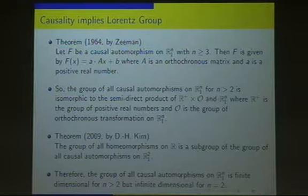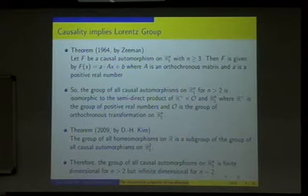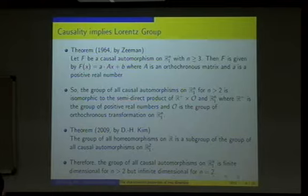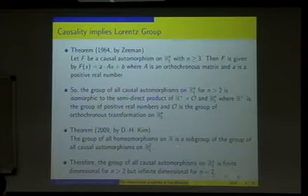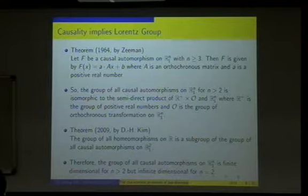What is the general form of a causal automorphism on Minkowski two-space? In Zeeman's theorem, it is not difficult to see the group structure of all causal automorphisms on Minkowski space — it has a structure isomorphic to a semi-direct product. In 2009, I proved that if we consider the group of all homeomorphisms on the real line, then this group is a subgroup of the group of all causal automorphisms on two-dimensional Minkowski space. As seen in Zeeman's theorem, the causal automorphism group on high-dimensional Minkowski space is finite-dimensional, but the causal automorphism group on Minkowski two-space is infinite-dimensional.